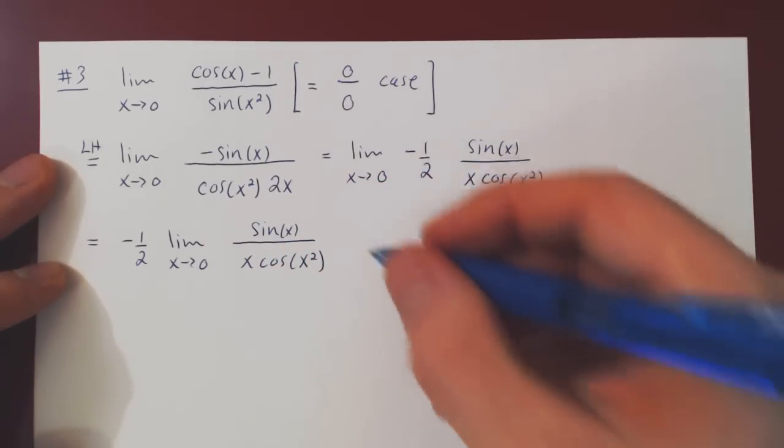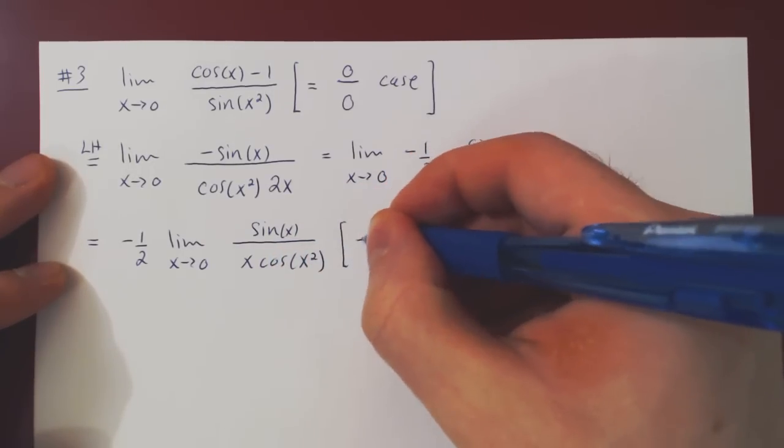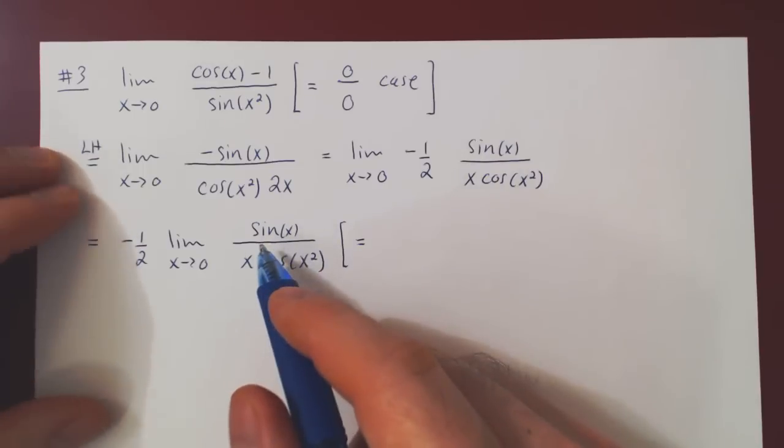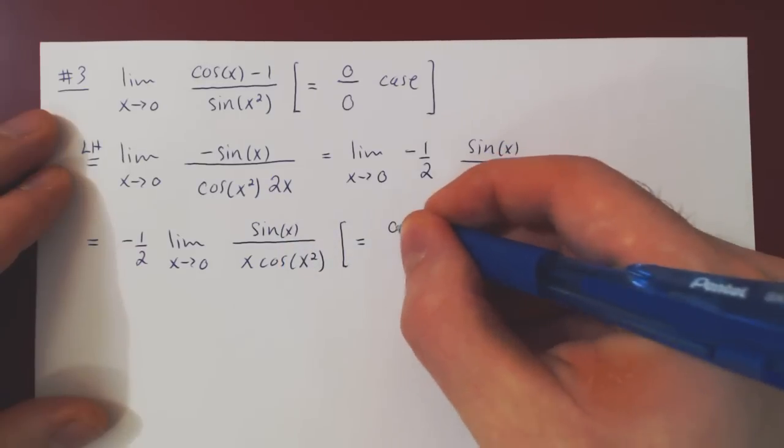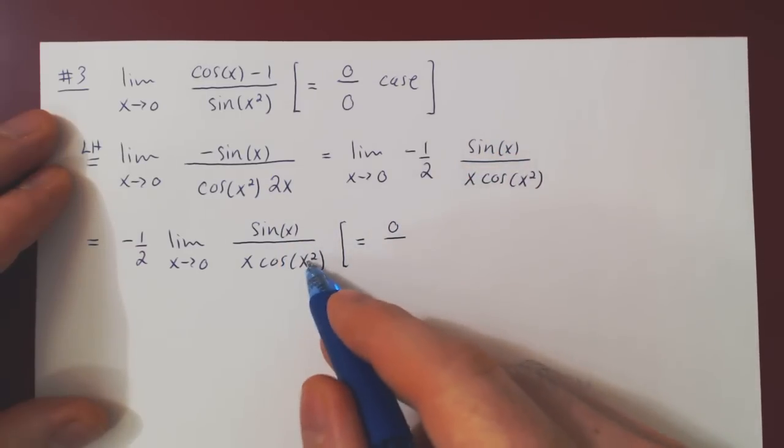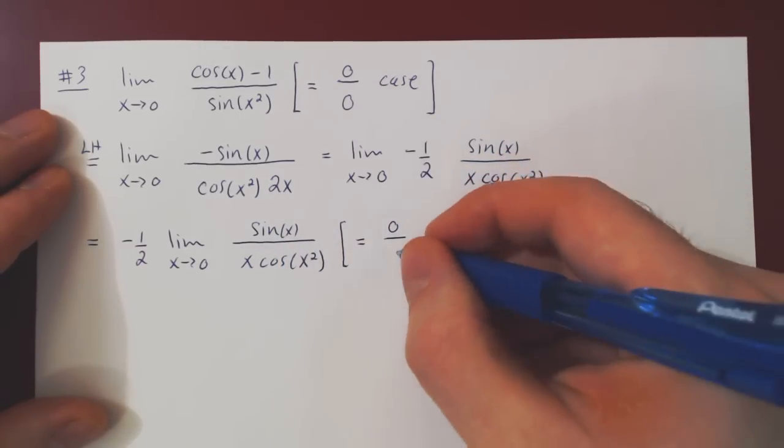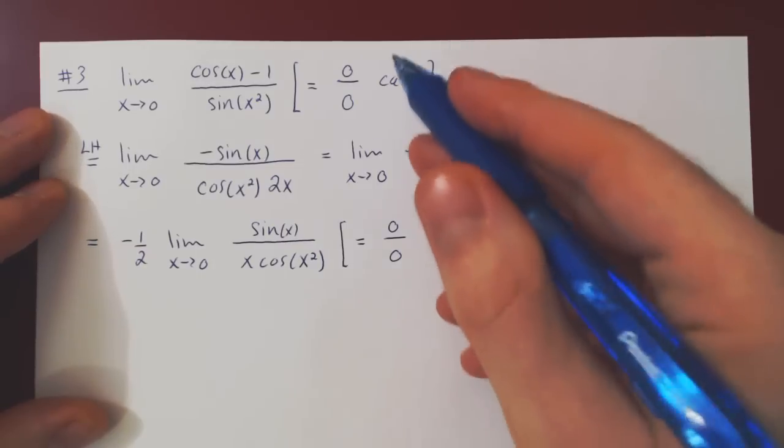And now we can ask, what is the case in this new limit? As x goes to 0, sin of 0 is 0 over, now cos of 0 is 1 but times 0 is again 0. So you see the new limit in this case is still giving us an indeterminate case.